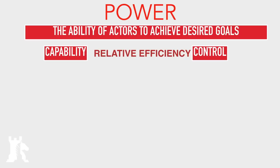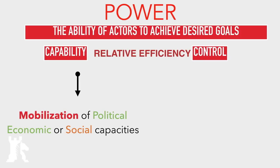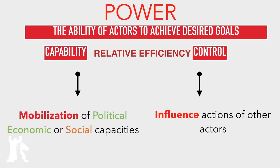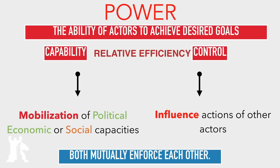Those desired goals mean the cultivation of capability — mobilizing your political, economic, and social capacities; fundamentally mobilizing your geoeconomic and geotechnological capacities and working them together to create relative efficiency, so you can influence or control the actions of other actors. This goes both ways and is mutually reinforcing: if you have more capability, you are not only able to exert more control on other actors in the international system, you are also able to resist their control. So cultivating your relative efficiency is how you prevent another power from influencing you.